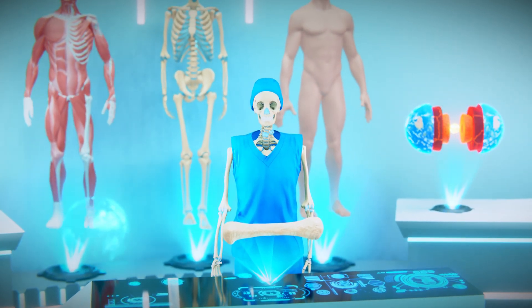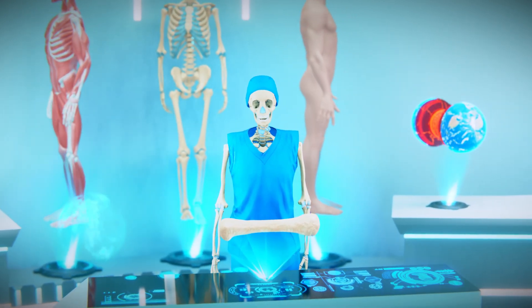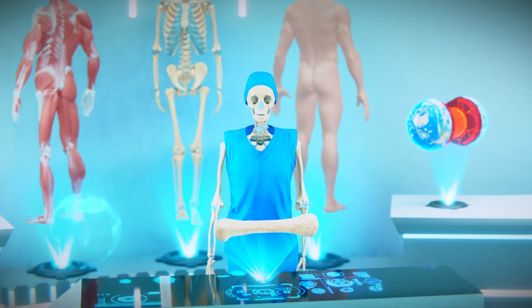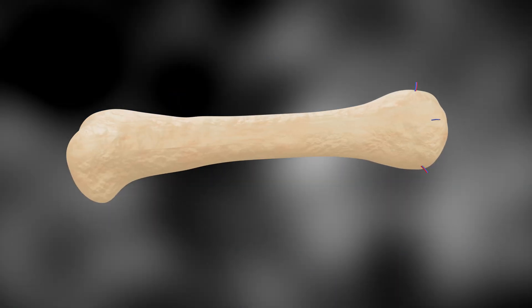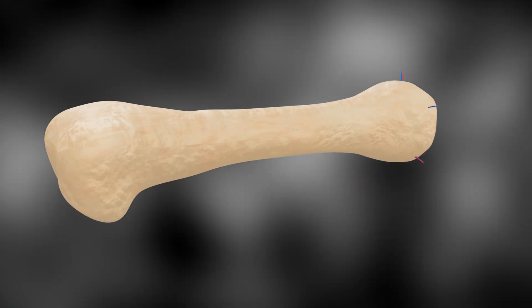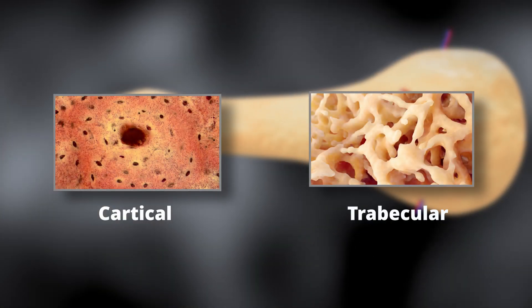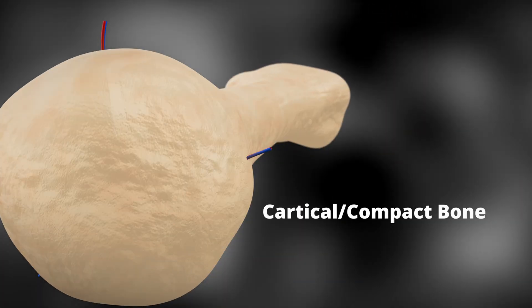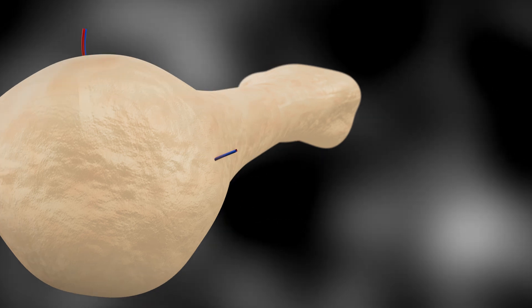First, let's understand the outer structure, then we will look at the inner structure. Bones are made of two types of tissues: cortical and trabecular. The outer layer is called cortical or compact bone, which is dense and solid, providing strength and the ability to withstand pressure.